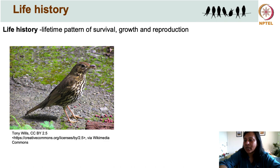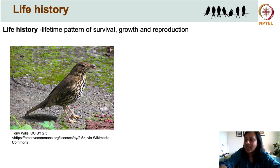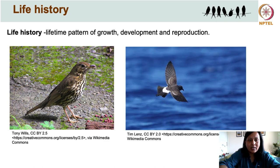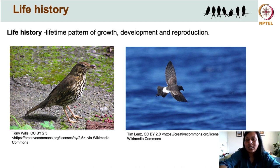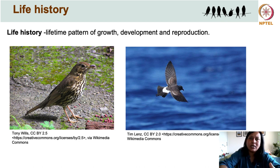Take this thrush for example. Among thrushes, they typically start reproducing at the age of one and produce several broods of three to four chicks every year, and these species rarely live beyond three or four years. In contrast, when we look at petrels — which are very similar in size to thrushes — they start reproducing much later, at four to five years of age. They produce a single chick every year, but they live ten times as long — between 30 to 40 years.